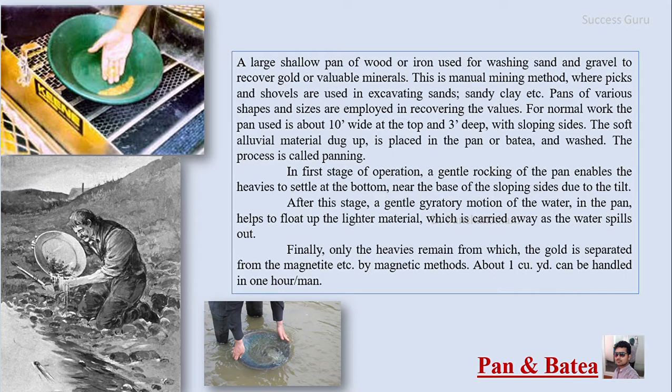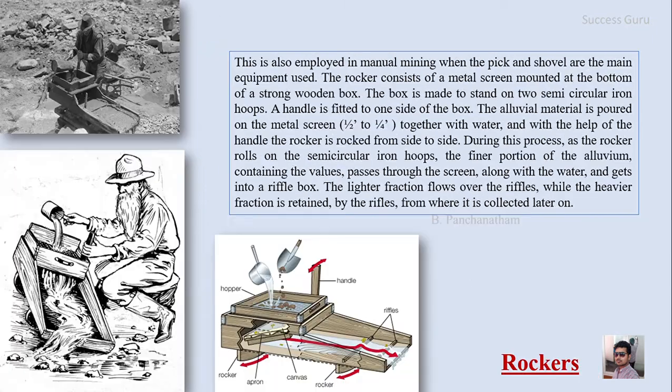In summary, pan and batia works by washing sediments in the pan. Material with low specific gravity floats out of the pan, while material with high specific gravity settles at the bottom. We may need to separate heavy minerals such as magnetite from gold using magnetic methods where magnetite is present.